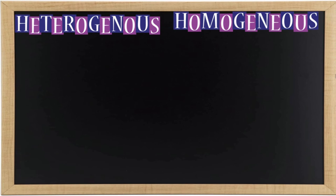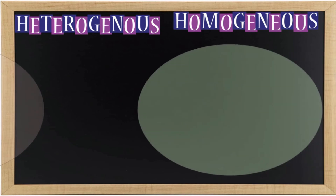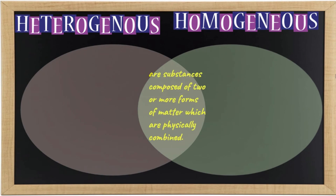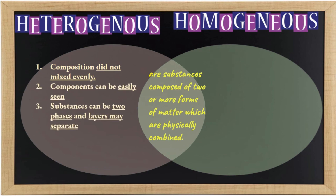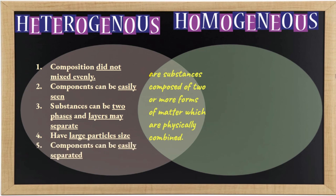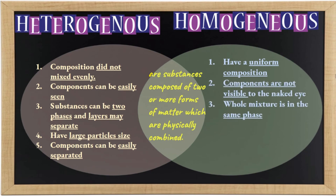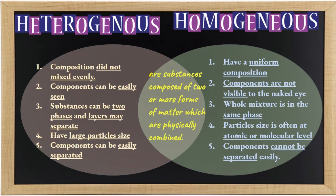Let us now summarize what we have learned today. Both homogeneous and heterogeneous mixtures are substances composed of two or more forms of matter which are physically combined. Heterogeneous mixtures have compositions that did not mix evenly, components can be easily seen, substances can be in two phases with layers that may separate, have large particle sizes, and components can be easily separated. Homogeneous mixtures have a uniform composition, are not visible to the naked eye, the whole mixture is in the same phase, particle size is often at the atomic or molecular level, and components cannot be separated easily.